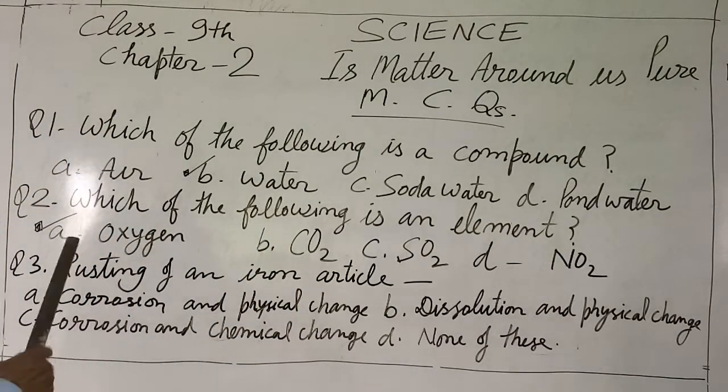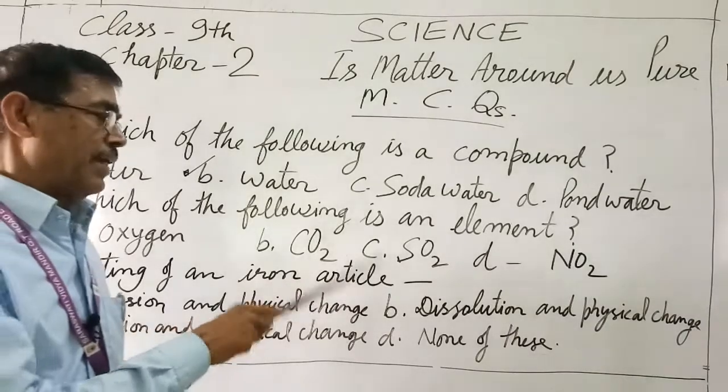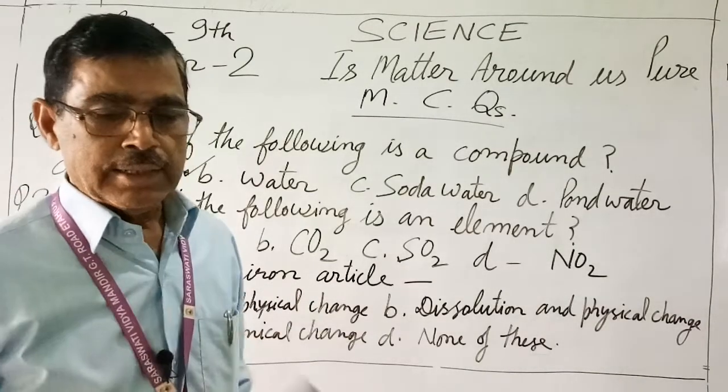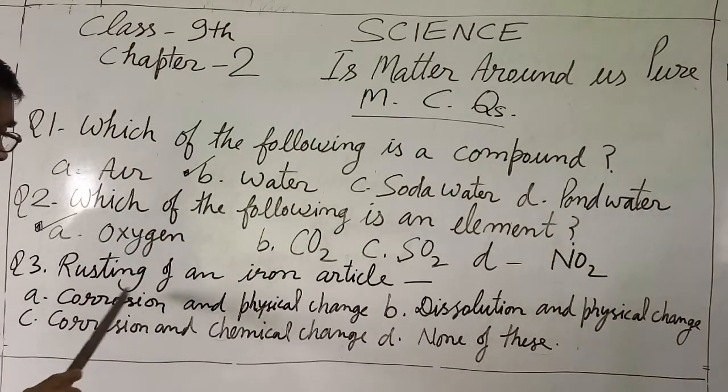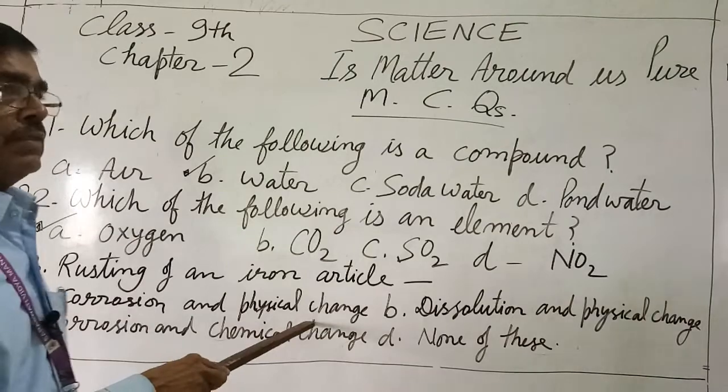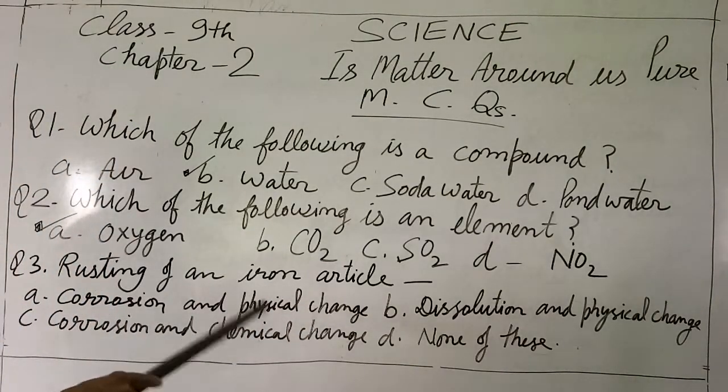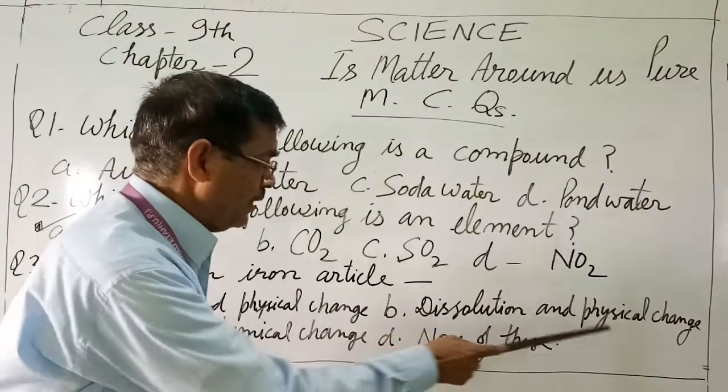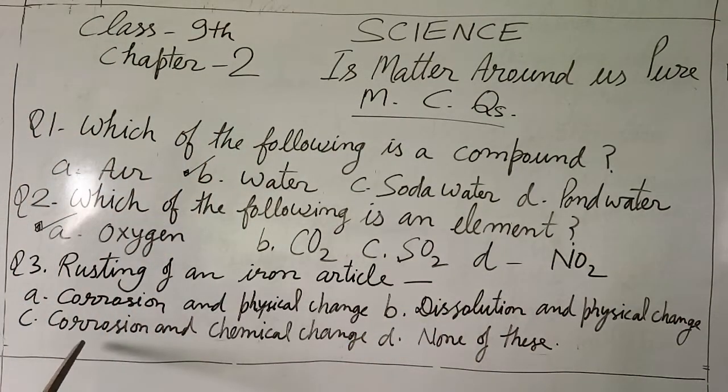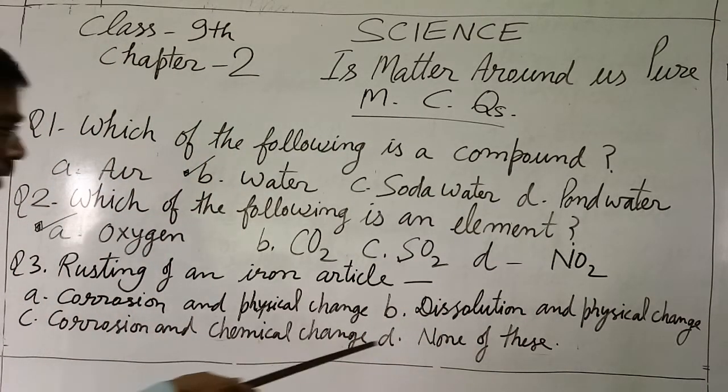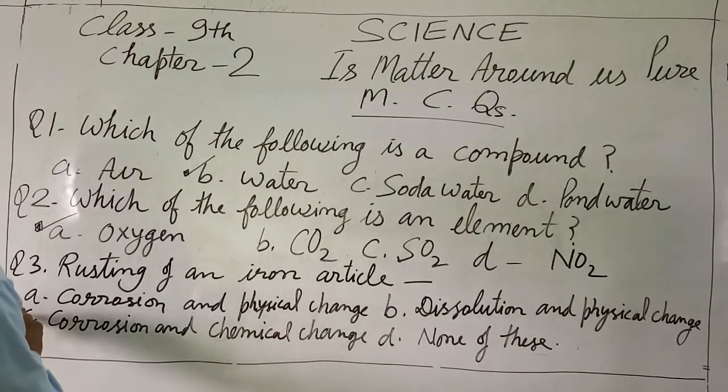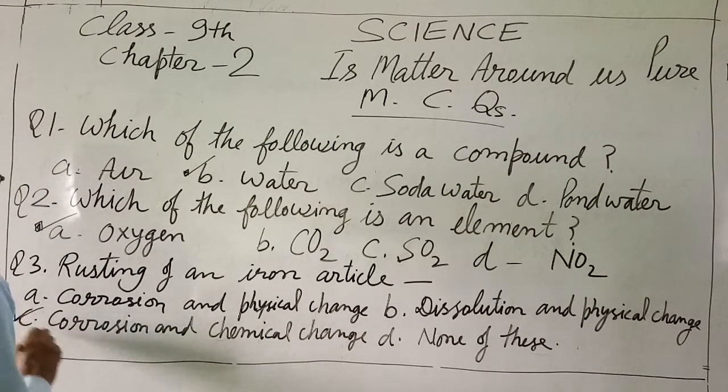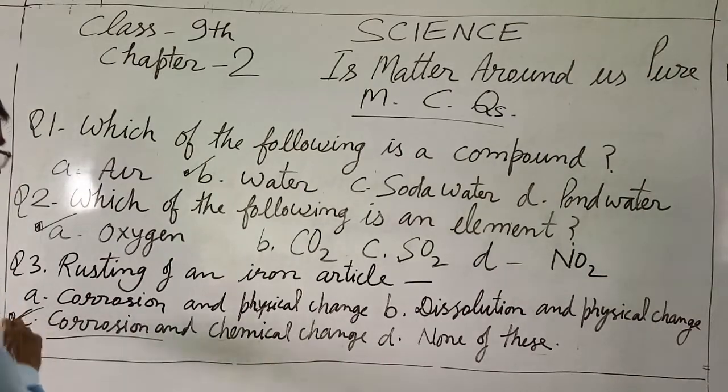Next, the rusting of iron article. Rusting of the iron, corrosion, and chemical change. So we have to take it - it depends on the chemical. Corrosion is chemical change. So here answer: C, corrosion and chemical change.